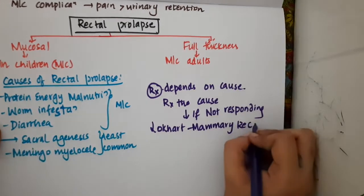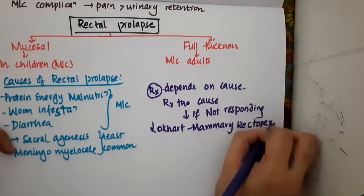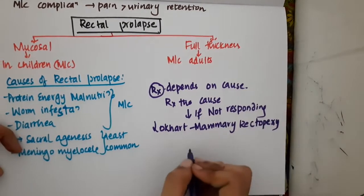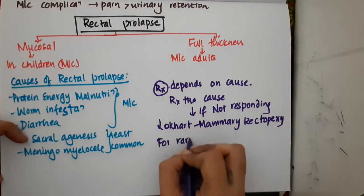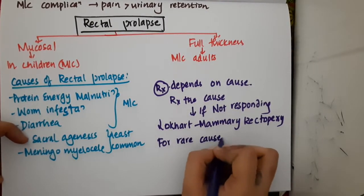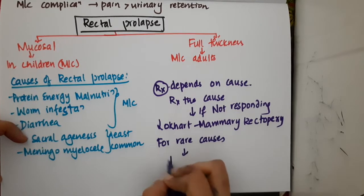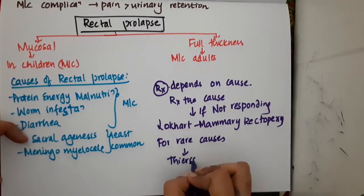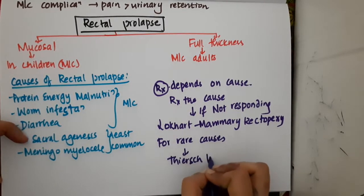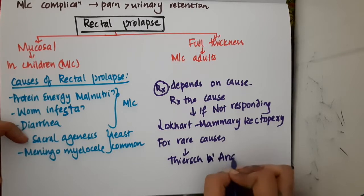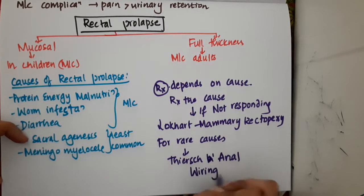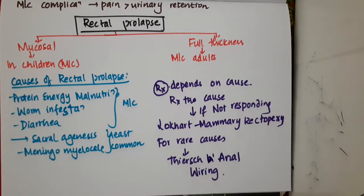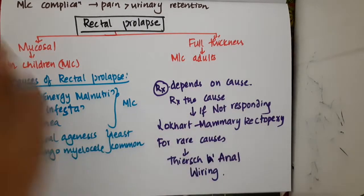Low Hartmann's rectopexy can be done. Then, for rarer causes, one more technique which is called Thiersch anal wiring can also be done. This is for rectal prolapse in children.